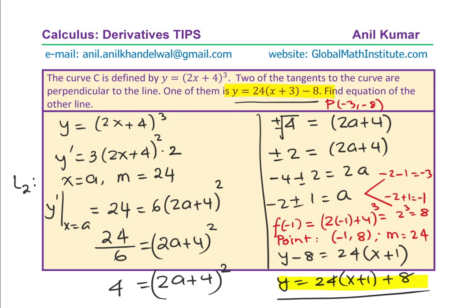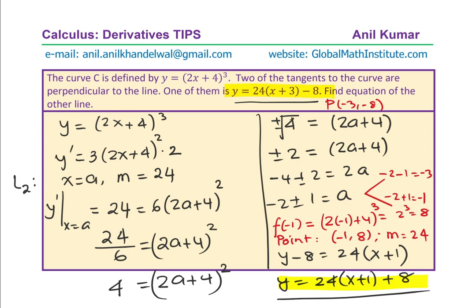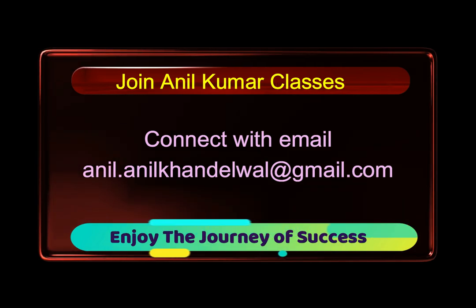You can find the similarities between the two equations. From symmetry, we can also confirm that the other point should be 1 unit to the right and at plus 8, which confirms our solution. I hope you understand and appreciate the technique involved in solving such a question. Feel free to write your comments, share your views, and if you like and subscribe to my video, that would be great. Thanks for your time and all the best.